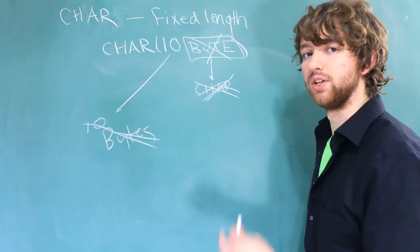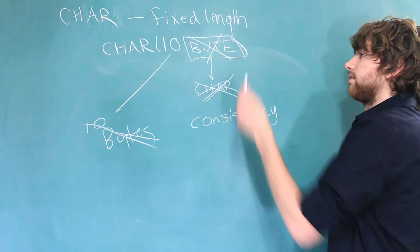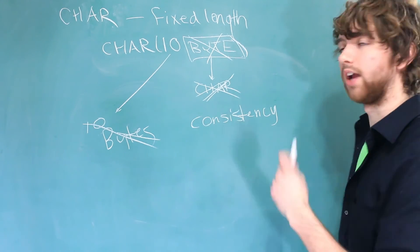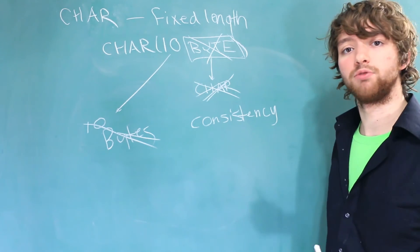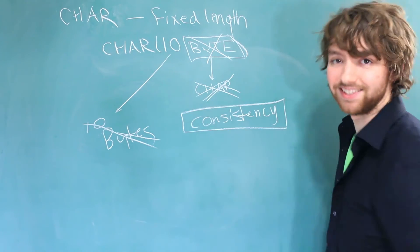The benefit of this though is for consistency. If you have some columns using byte length semantics and then others using character length semantics, it is going to be very confusing. Regardless of which one you decide to use, you want to be sure to be consistent.